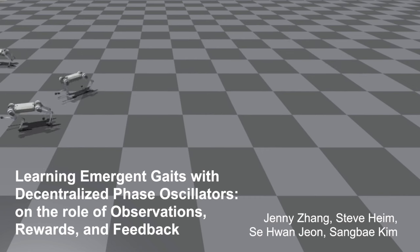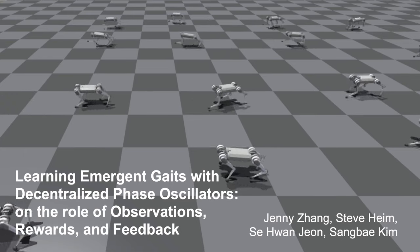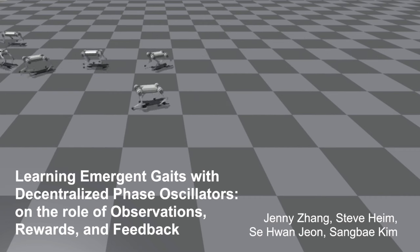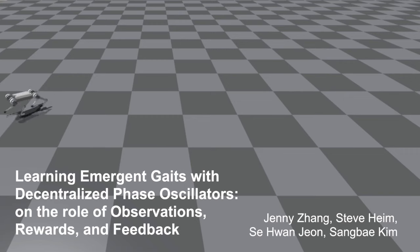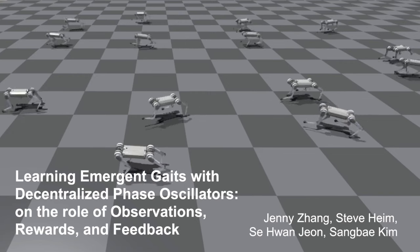During locomotion, quadrupeds can exhibit a variety of gaits, or footfall patterns, such as trotting and bounding. We present a learning framework using decentralized phase oscillators that encourages regular gaits using all four legs without explicitly specifying which gait to be in, enabling natural gait emergence and transitions.